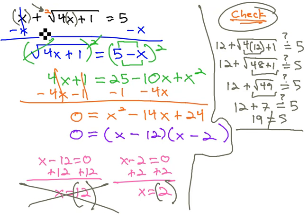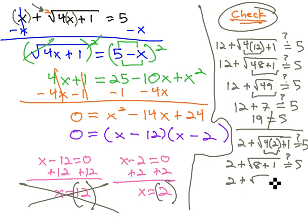Still checking the 2 then, plugging the 2 in for the x's. x becomes 2 plus the square root of 4x, 4 times 2, plus 1. Let's see if that equals 5. 4 times 2 is 8, so we have 2 plus the square root of 8, plus 1. Is that going to equal 5? 2 plus the square root of 8, plus 1 is 9. Is that going to equal 5?